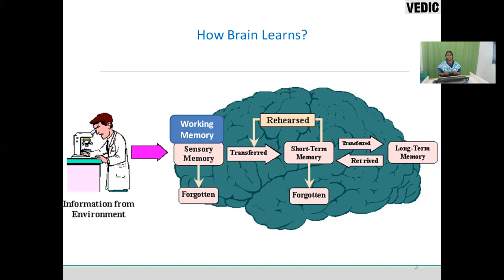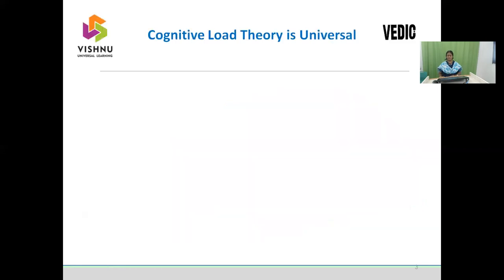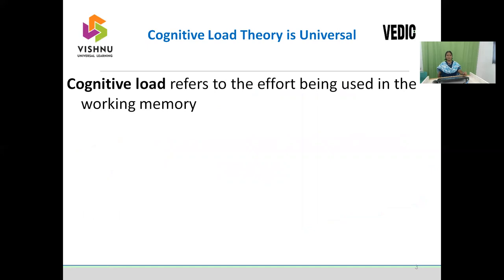How do we take care of cognitive load for novice learners? Cognitive load means the brain load — the learning load given to the student. How we can reduce the brain load of learners with the support of instructional design and instructional delivery is the topic of discussion. Cognitive load theory is universal — it refers to the effort being used in the working memory, the sensory memory.